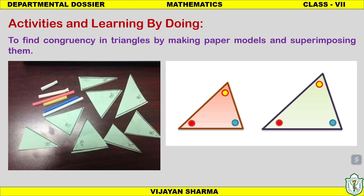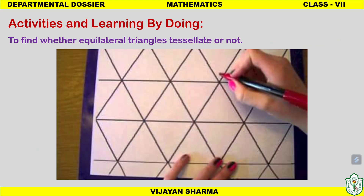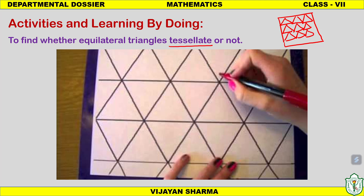For the triangles chapter, we make paper models of triangles and superimpose them to determine whether two triangles are congruent. When two paper triangle models superimpose exactly one upon the other, the triangles are congruent; if they don't superimpose, they are not. Another activity uses equilateral triangles to tessellate — covering a plane surface with equilateral triangles in a pattern. The number of triangles needed is found by dividing the surface area by the triangle's area.